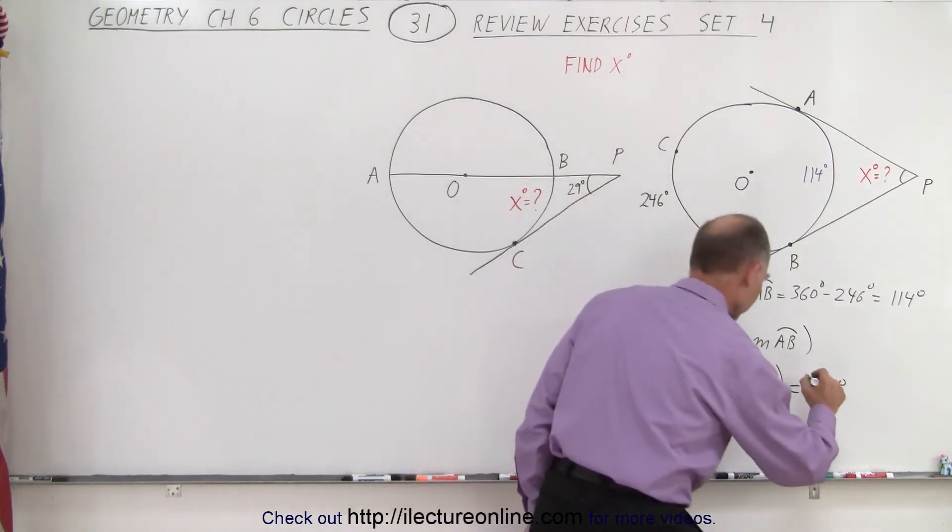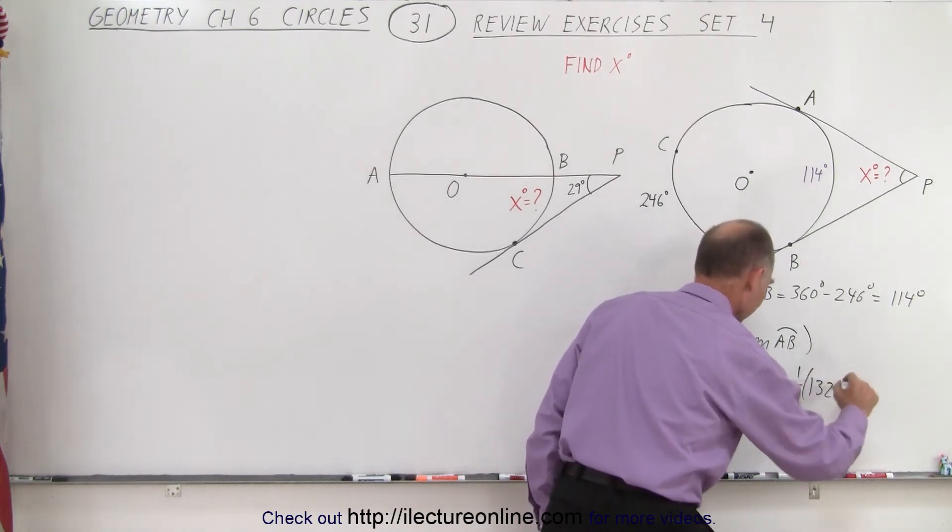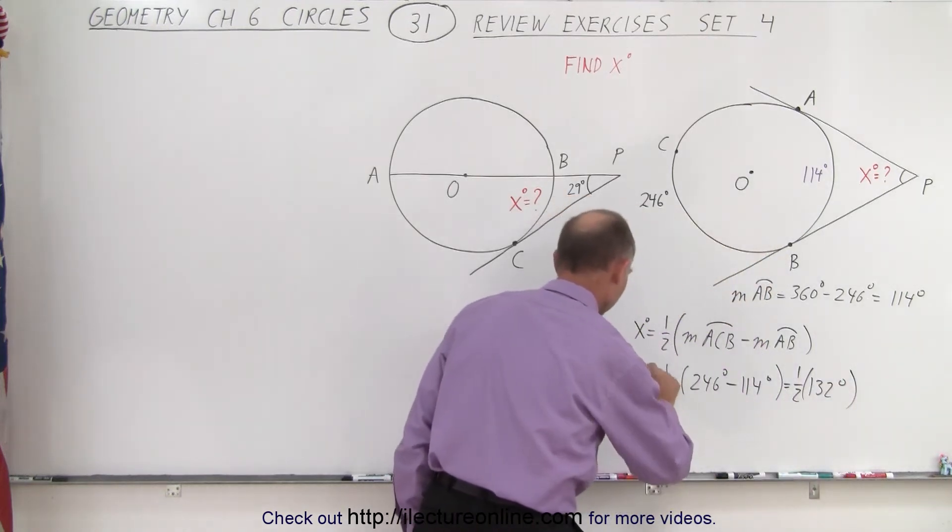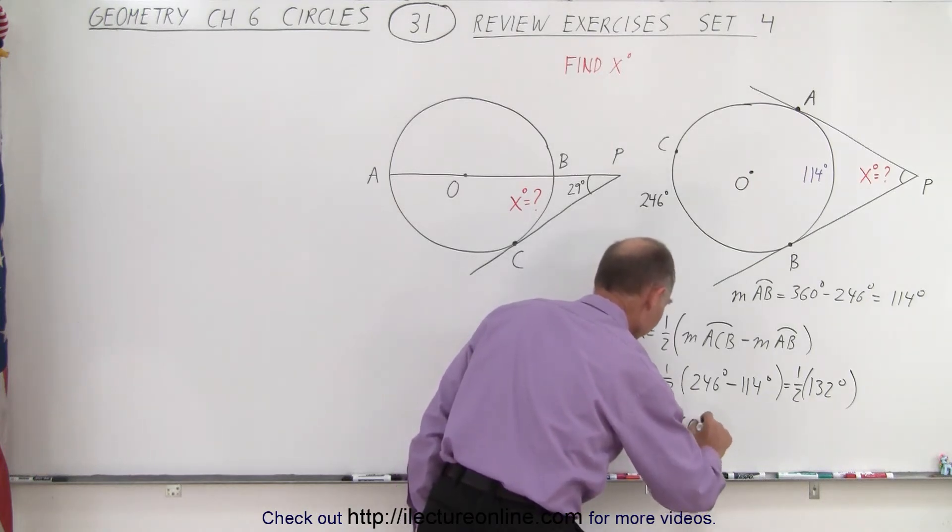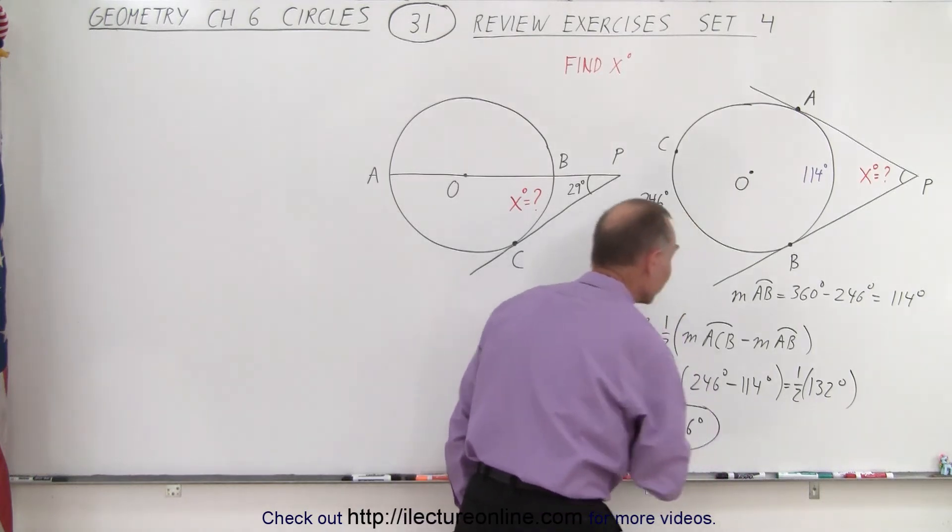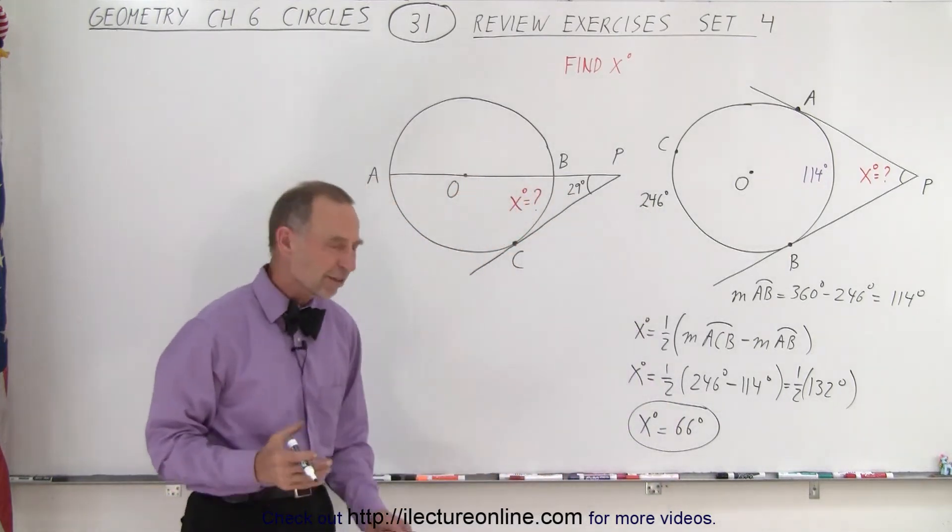So we take half of that, times one half. Can't forget the one half. There we go. And so therefore the value for x, x degrees equals half of that which is 66 degrees. And that's the value for that angle right there. So it's very straightforward.